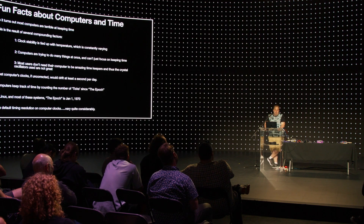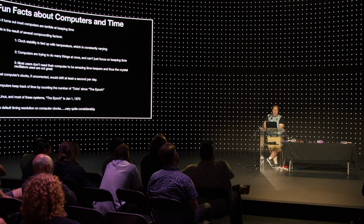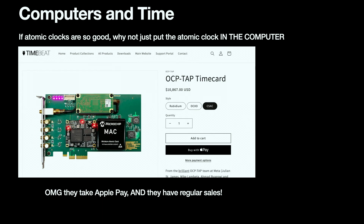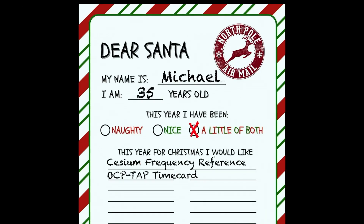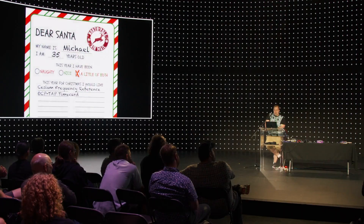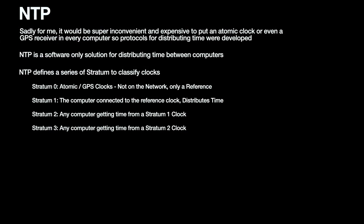The default timing resolution on computer clock chips is very variable. You can put an atomic clock in the computer — this is the OCP TAP Time Card, an open hardware project from a company called TimeBeat. But it would be really super inconvenient to have to put an atomic clock in every media server. The first way computers adjust time is by NTP, which is a software-only solution. It defines a series of strata to classify clocks: stratum zero is the atomic clock, stratum one is any computer directly connected to the reference clock, stratum two gets time from stratum one, and so on.